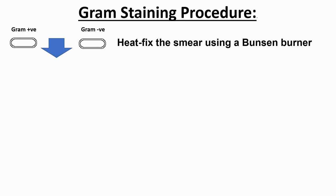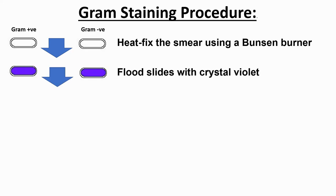The gram staining procedure — this is a visual representation of the steps involved. After heat fixing the cells to the slide using a blue Bunsen flame, flood the slides with crystal violet solution. After a minute, wash the crystal violet off with distilled water.